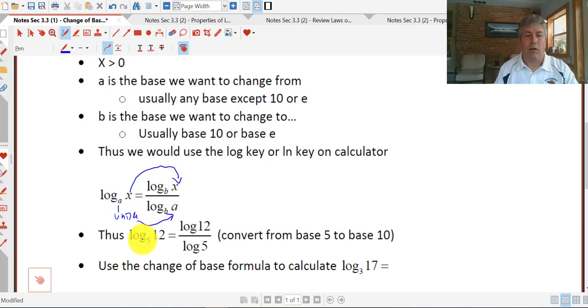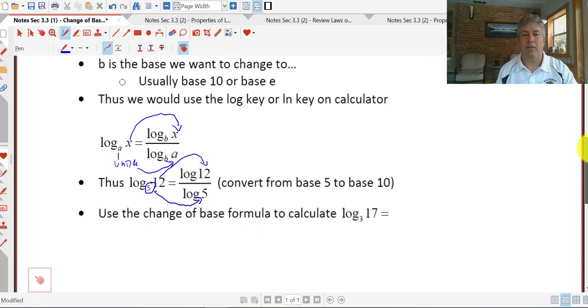If we want to convert log base 5 of 12 to base 10, we'll do log 12 or log base 10 of 12 over log base 10 of 5 or log 5. Since the 12 is kind of above, that goes in my numerator, and the 5 is below, that goes in my denominator. So log 12 over log 5 would convert from base 5 to base 10.